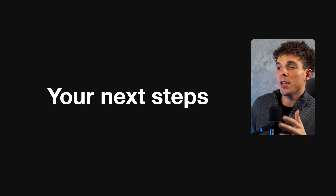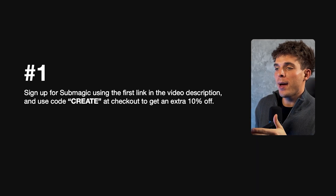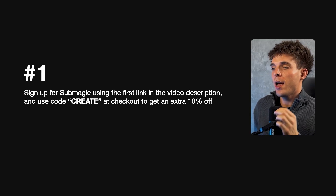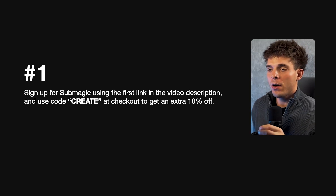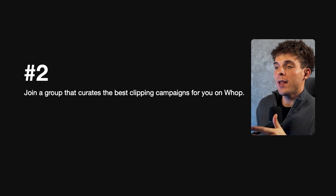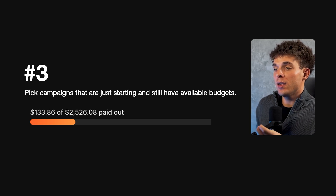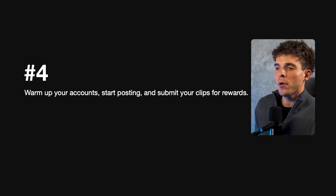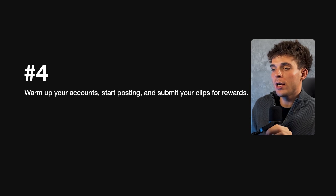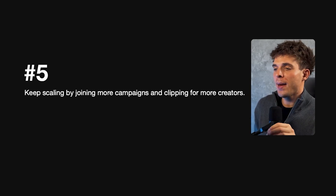That's the complete updated WAP clipping tutorial — from setting up your page, joining campaigns, using AI to generate clips, to finally getting paid. To summarize: sign up for Submagic using the first link in the video description and use code CREATE at checkout for 10% off. Join a group that curates the best clipping campaigns. Pick campaigns that are just starting and still have available budgets. Warm up your accounts, start posting, and submit your clips for rewards. Keep scaling by joining more campaigns and clipping for more creators. Thank you so much for watching and I'll see you in the next one.